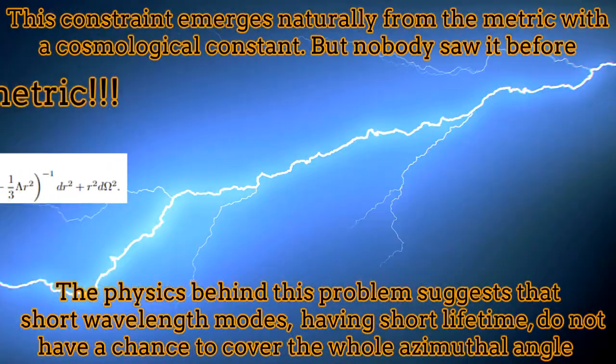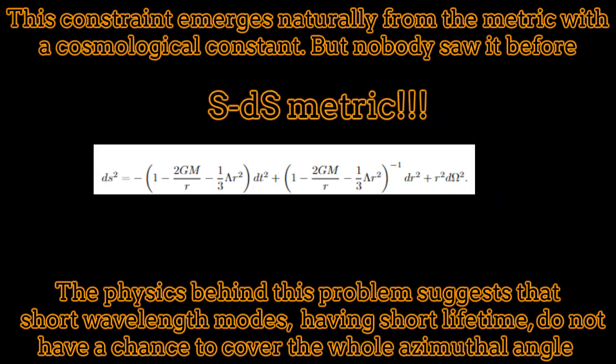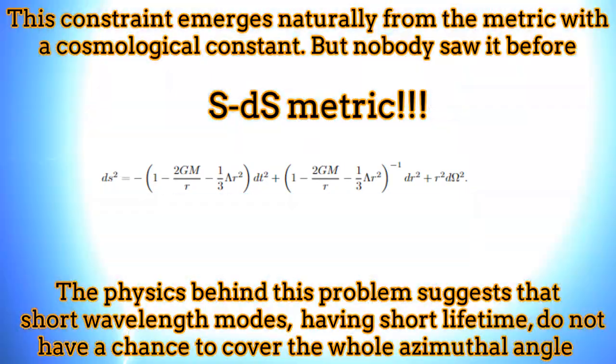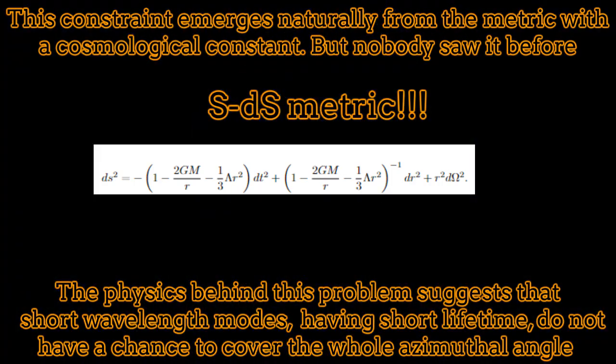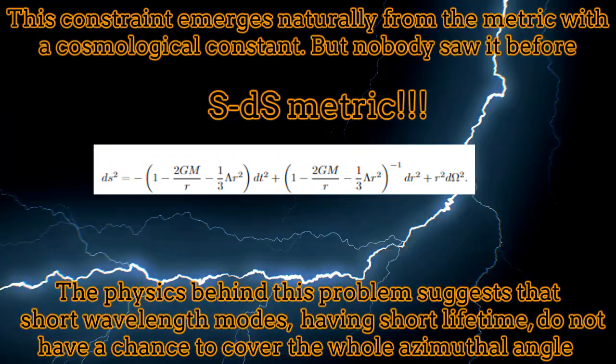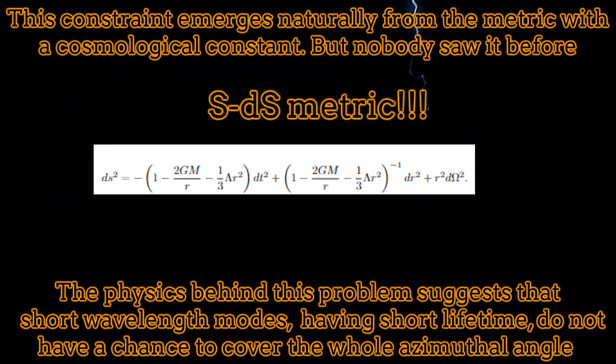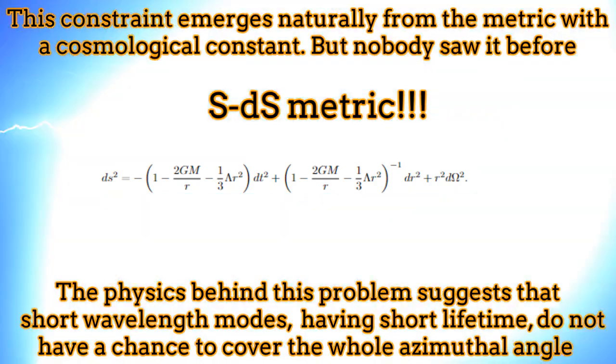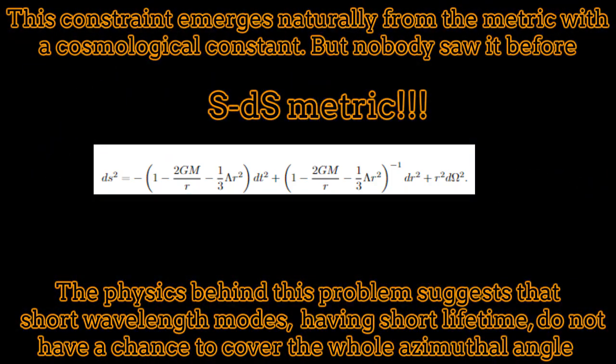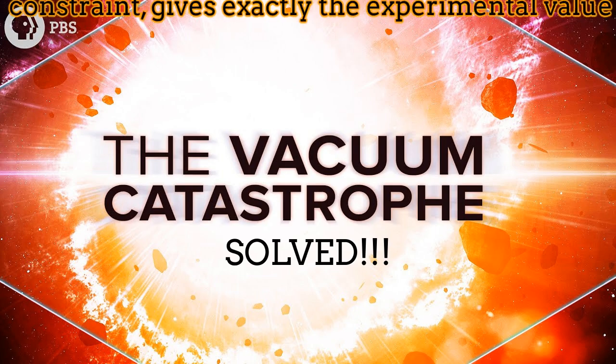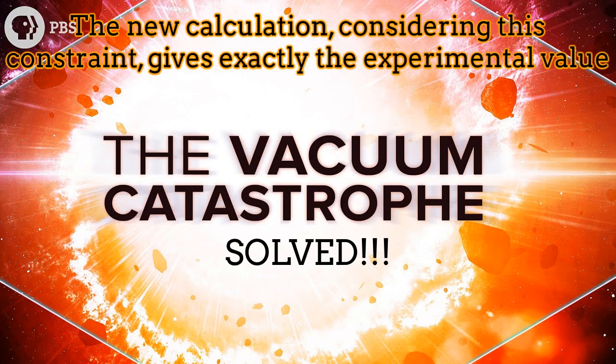What is impressive is that, by mixing quantum arguments with the standard solution of the de Sitter metric, the constraint emerges naturally. It was there since the beginning inside the metric, but interestingly, nobody noticed it before. The new calculation gives exactly the value which the experiments suggest.